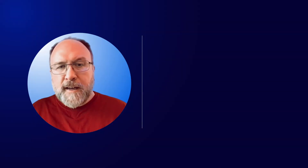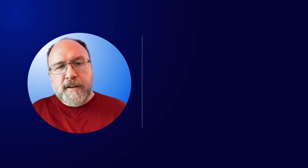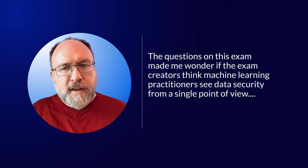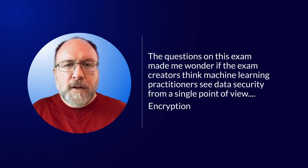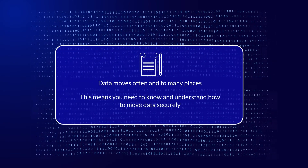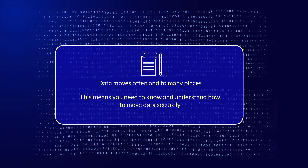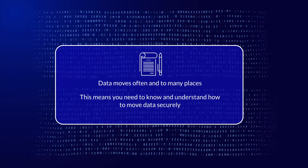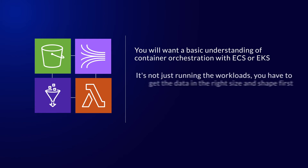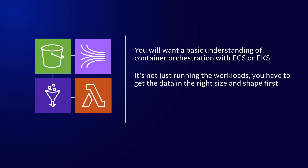Years ago I started my journey into the AWS cloud as a solutions architect, so I have lots of experience working with and securing Amazon S3. The questions on this exam made me wonder if the exam creators think machine learning practitioners see data security from a single point of view: encryption. However, when working with machine learning, data moves often and to many places, so you need to know how to move data securely — not just encryption, but encryption in flight, working with VPC endpoints, and resource policies. You'll also want a basic understanding of container orchestration with ECS or EKS, and know how to optimize containers for cost, security, and ease of use. It's not just running the workloads; you have to get the data in the right size and shape first.